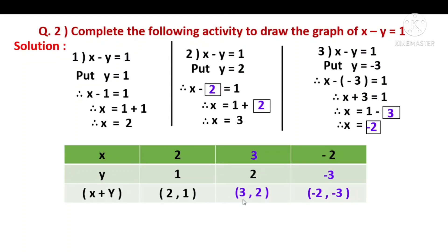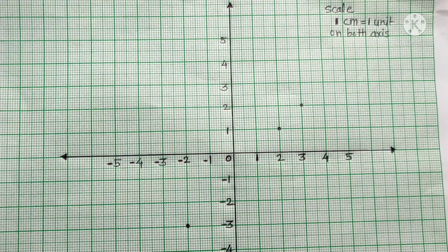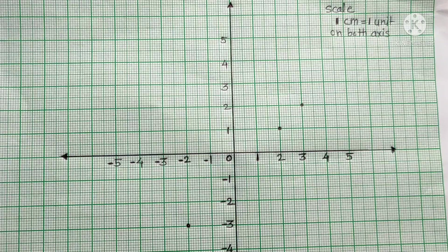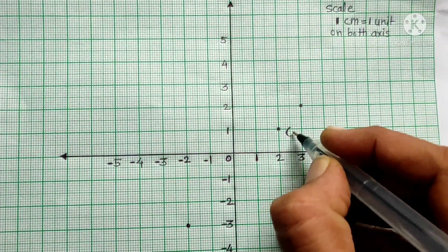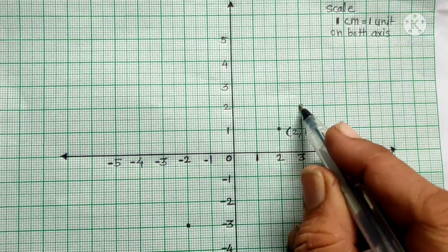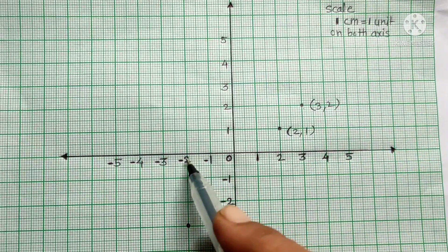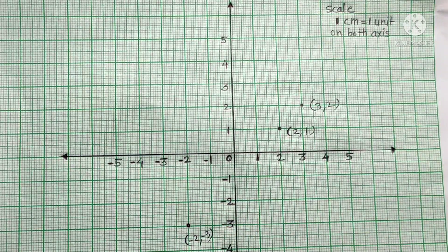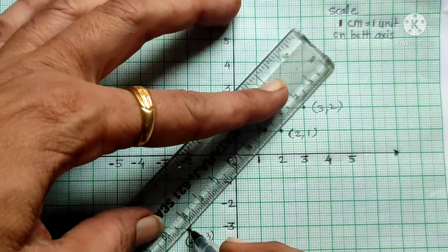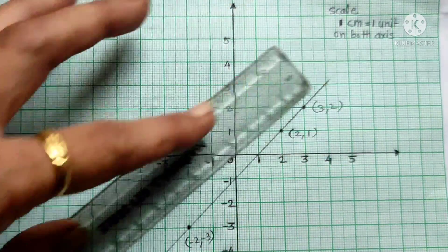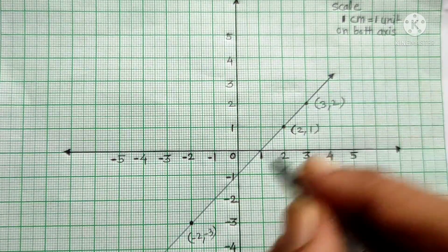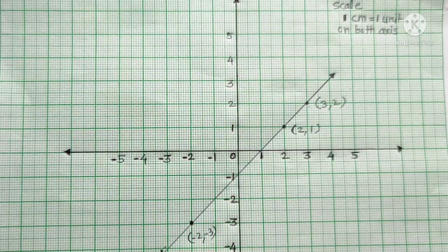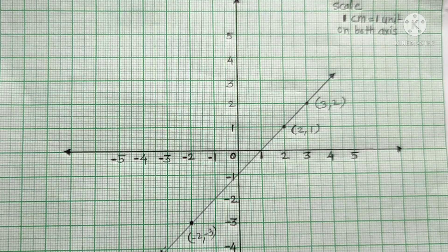The points we have are 2 comma 1, 3 comma 2, and minus 2 comma minus 3. These three points need to be plotted on graph paper, and then draw a line through them. Three points will be plotted on graph paper, and the line will be drawn.